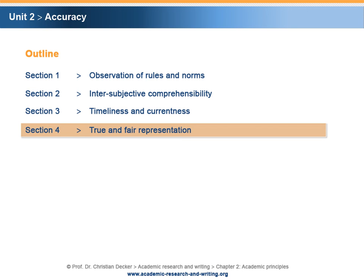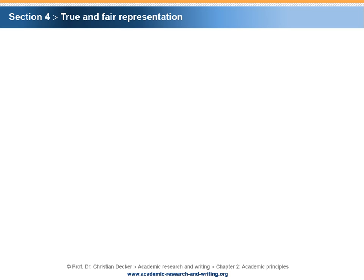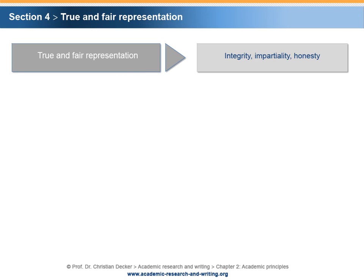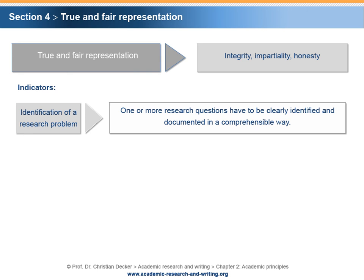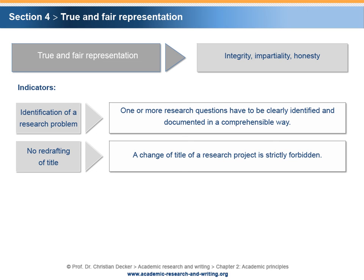Section 4: True and Fair Representation. The principle of accuracy implies a true and fair representation of your research work. True and fair representation means that you have to act with integrity, impartiality and honesty. There are four aspects that can serve as indicators. First, identification of a research problem: one or more research questions have to be clearly identified and documented in a comprehensible way. The research problem has to be deduced from the title or inherent topic of the research project. No redrafting of title: a change of the title of a research project is strictly forbidden. Even if you are not able to deduce a research problem from the title of your project, you are not allowed to make any changes. This holds true for an examination situation as well as for officially sponsored research projects.